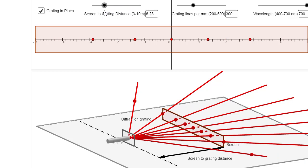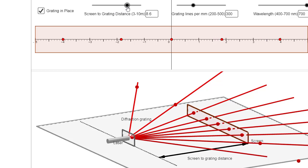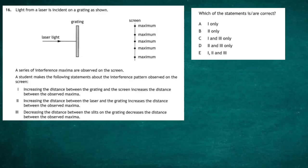Going from this position and increasing the distance from the diffraction grating to the screen, you can see the maxima are moving further apart. So the answer to the first part of our question is yes, that's going to be true. Increasing the distance between the grating and the screen increases the distance between the observed maxima.